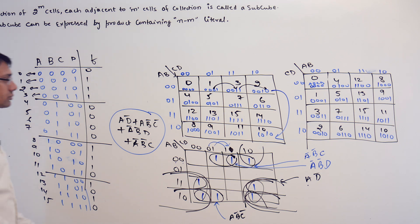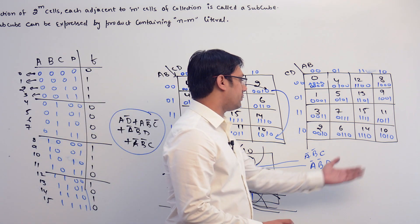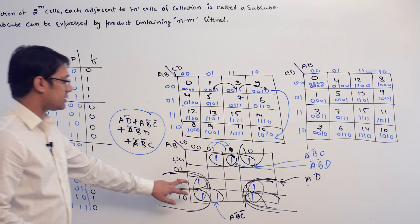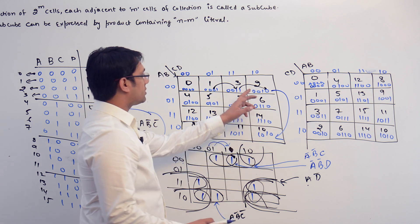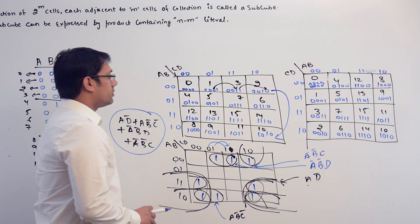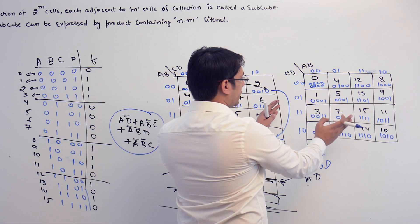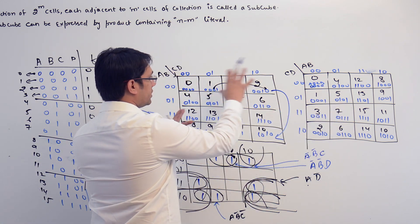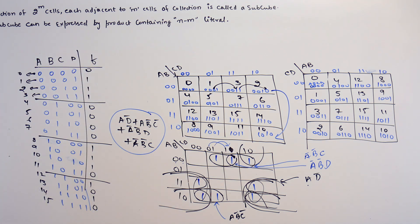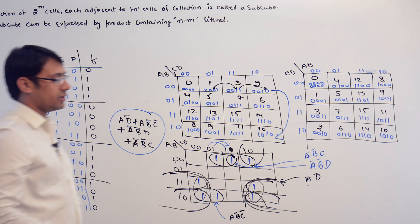We can also discuss this on the other K-map orientation; the only thing that changes is the position of the ones. For example, minterms 2 and 3 are represented in different locations — it is essentially a rotation of the K-map. Let me take one more example and elaborate everything in more detail.